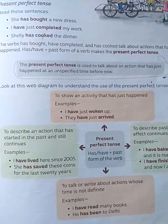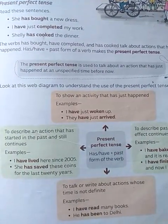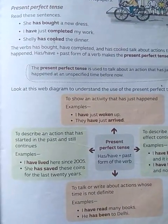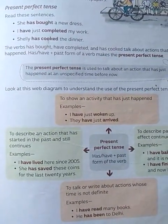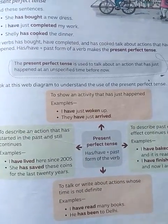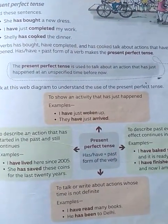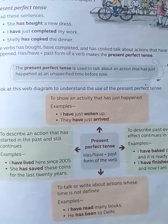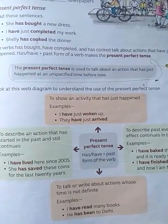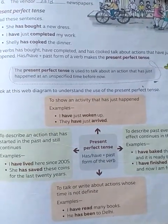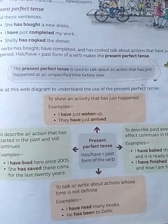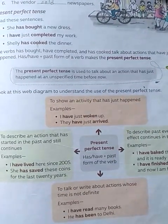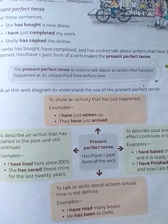My dear students, we are doing the revision of the chapter on tenses. Hamloh tenses Chapter 8 ka revision kar rahe the. Last class me hamloh present perfect tense ka definition pari thi. The present perfect tense is used to talk about an action that has just happened at an unspecific time before now.